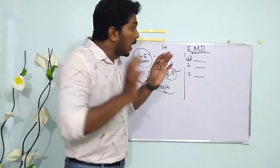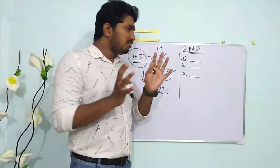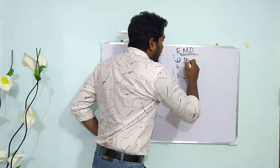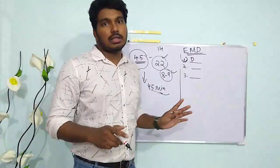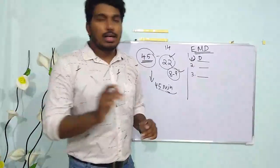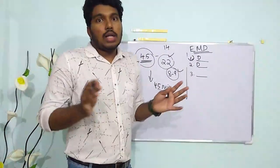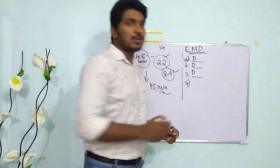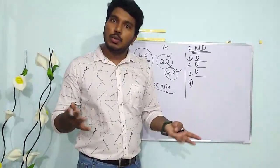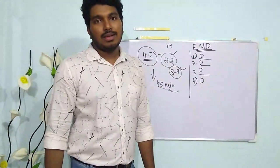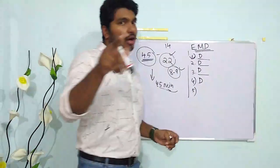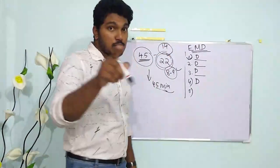So the EMD strategy — E is Easy, M is Medium, and D is Difficult. If D keeps coming up as the answer multiple times in a row — 3 times, 4 times — don't let the tension get to you. Believe that there are easy questions and medium questions waiting for you. That's the point I'm trying to tell you.